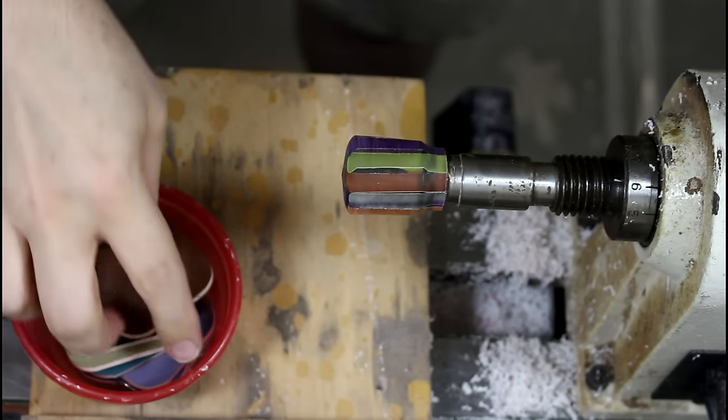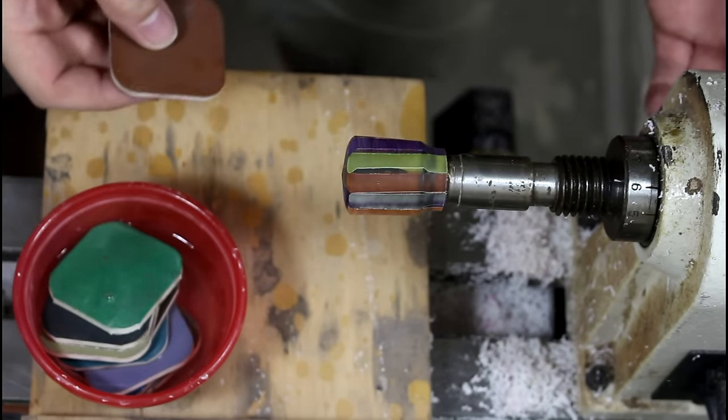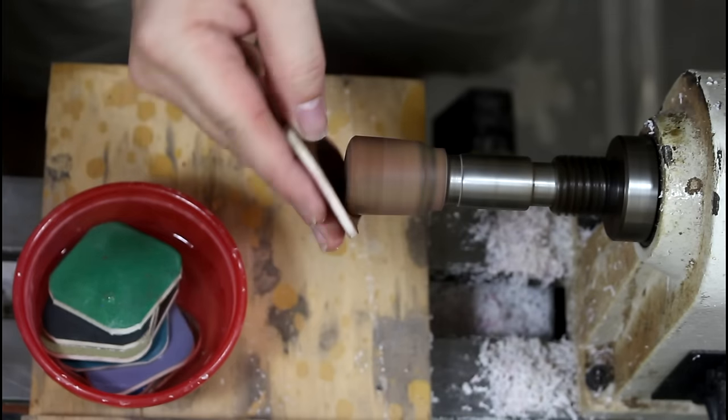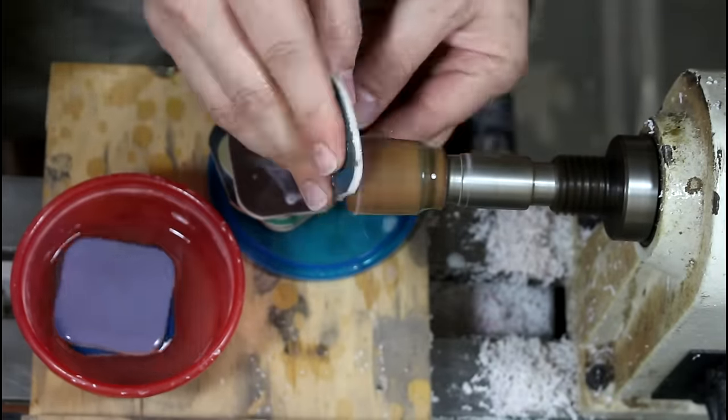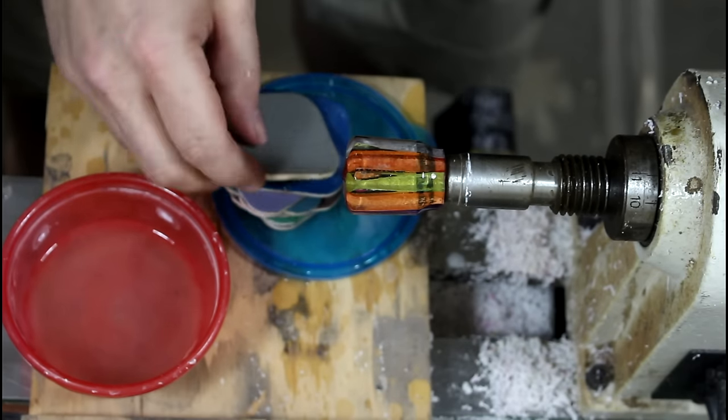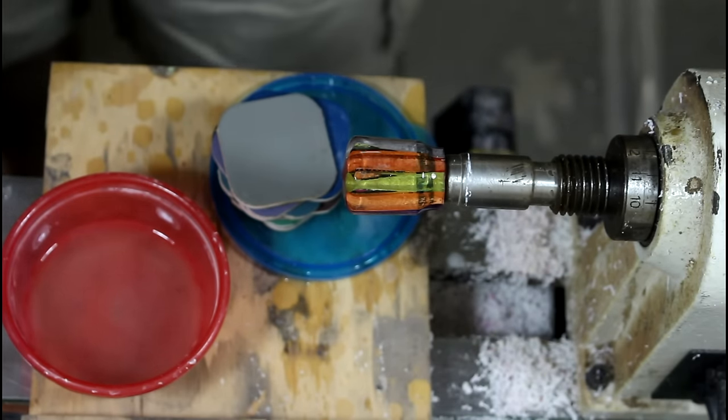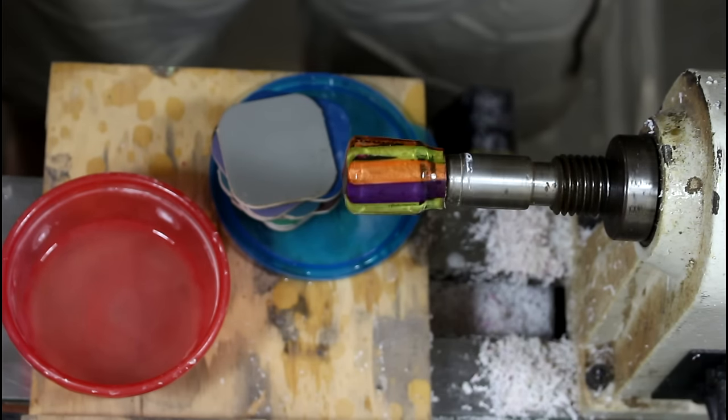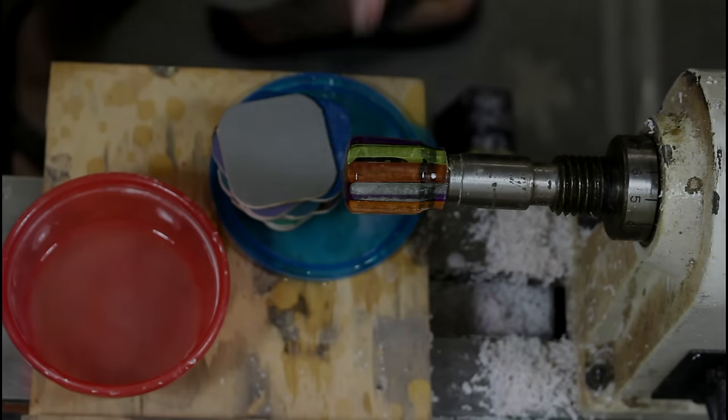So I'm going to start with the micro mesh. It starts at 1500 and goes through 12,000. I did not think it was going to look like that. You just never know until it's polished. That is a winner.